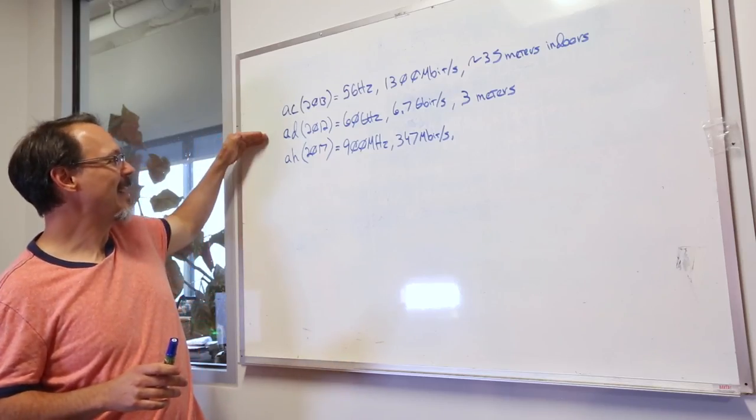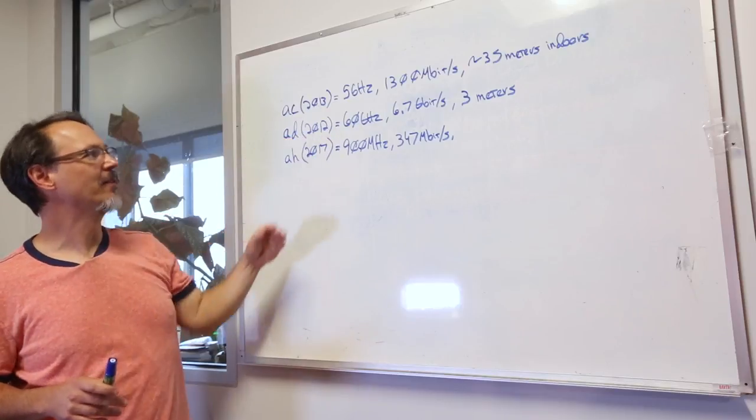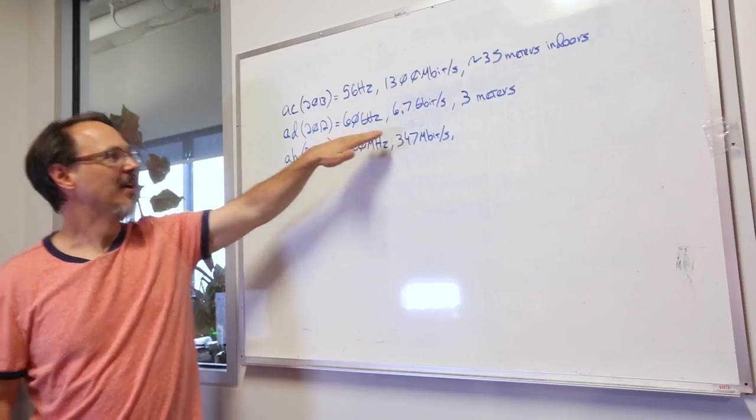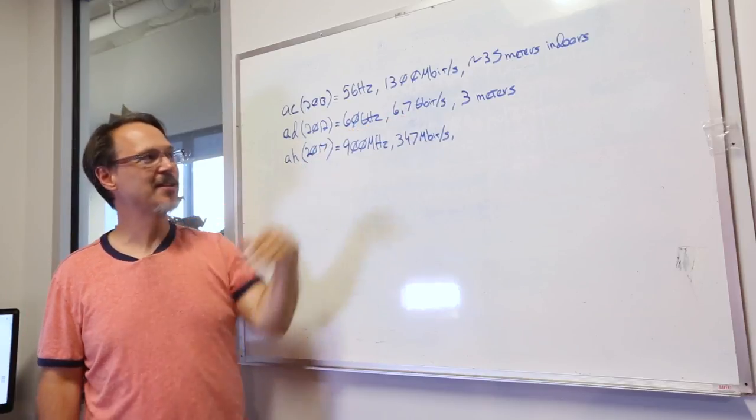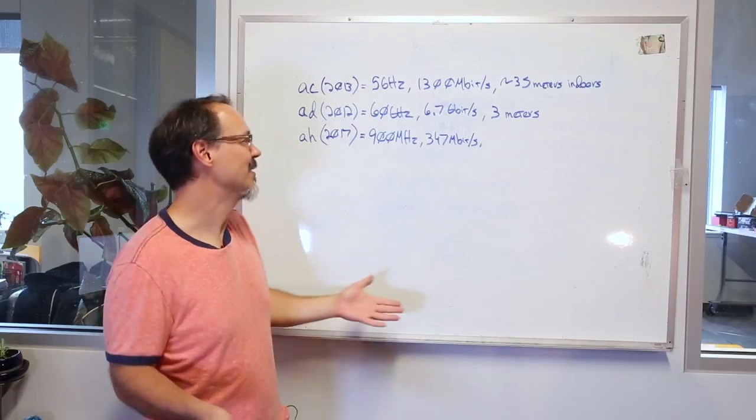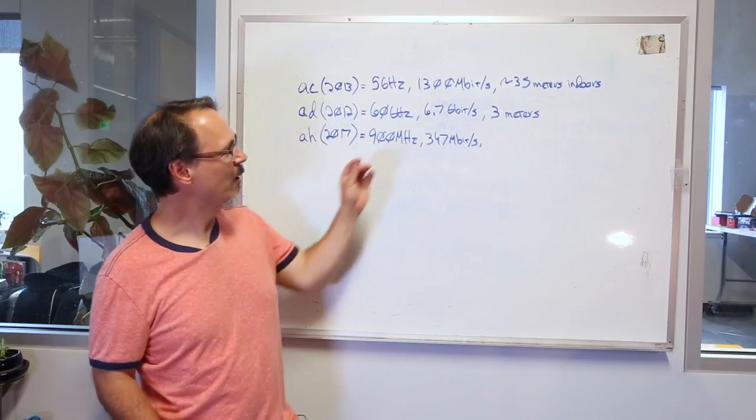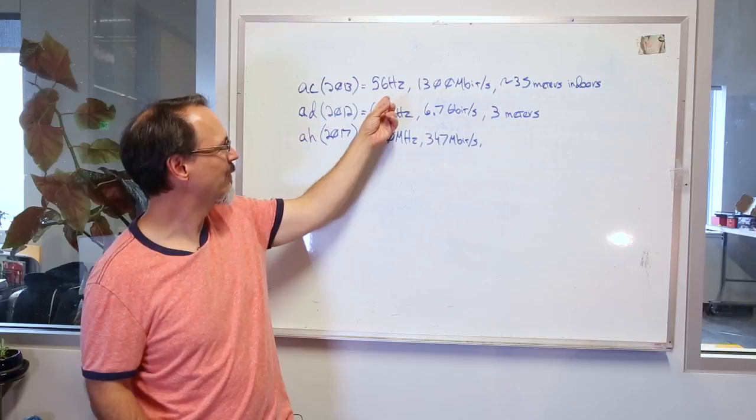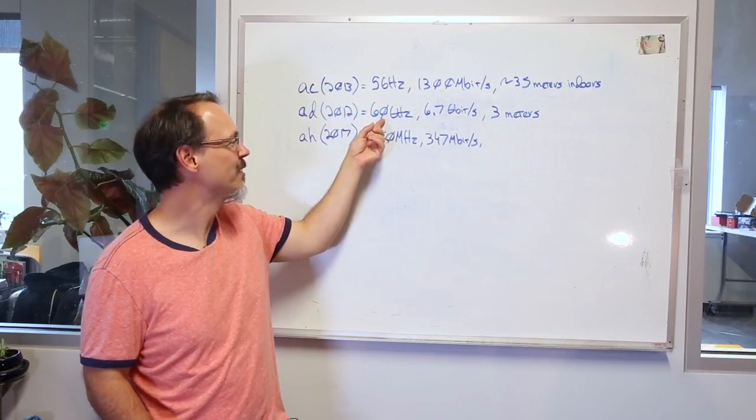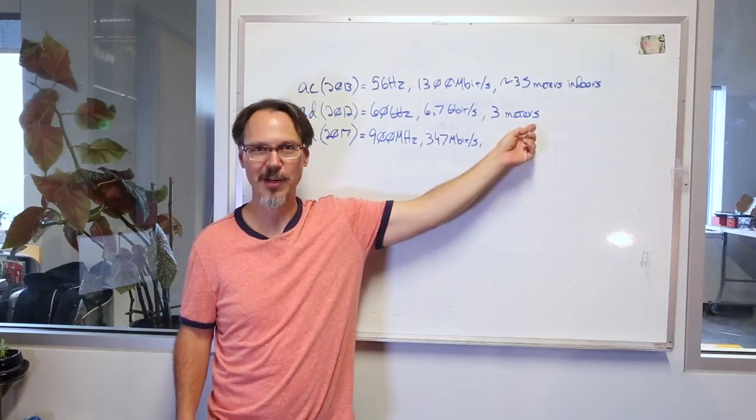Then there is AD, which was adopted in 2012. AD runs at 60 gigahertz, can get up to 6.7 gigabits per second. Who would need that? Somebody needs it. But if you're having trouble getting propagation at five gigahertz, I can tell you 60 gigahertz is going to be much, much worse. In fact, your range is down to three meters.